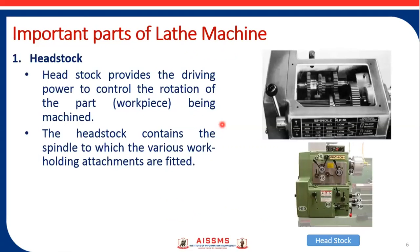What are the important parts of lathe machine? The first part is headstock. It is generally present at the left-hand side of the lathe machine and is manufactured by the process of casting. The function of headstock is to provide the driving power to control rotation of the workpiece. The headstock supports the spindle, on which the chuck rotates, providing the driving motion to the workpiece. The headstock also contains a spindle to which various work-holding attachments are fitted.